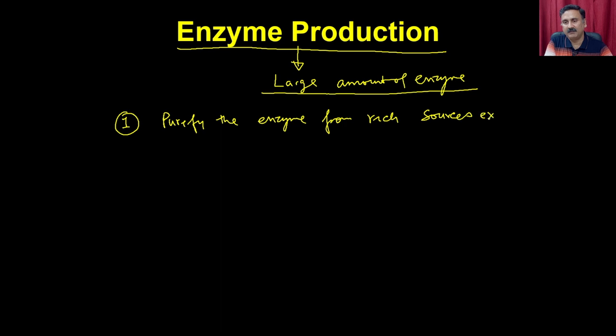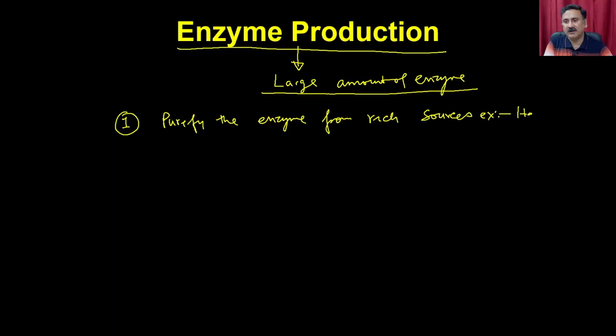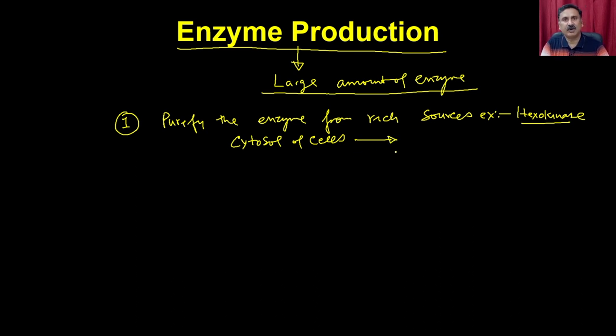For example, if I have to purify the enzyme hexokinase from glycolysis, I can isolate the cytosol of a cell and use different types of conventional chromatography techniques to get the pure enzyme. The same is true for many other enzymes like lysozyme or lipase.